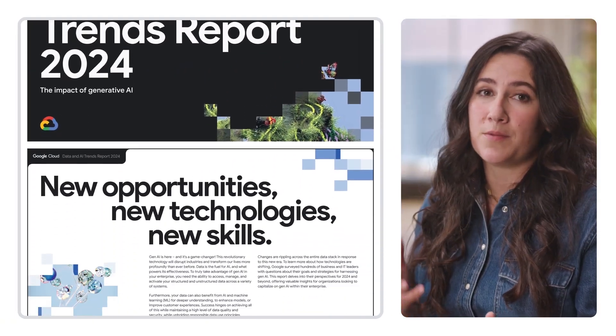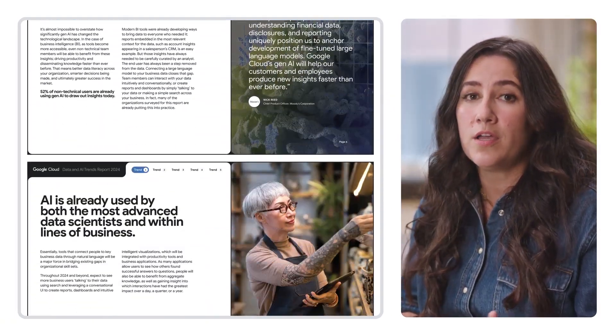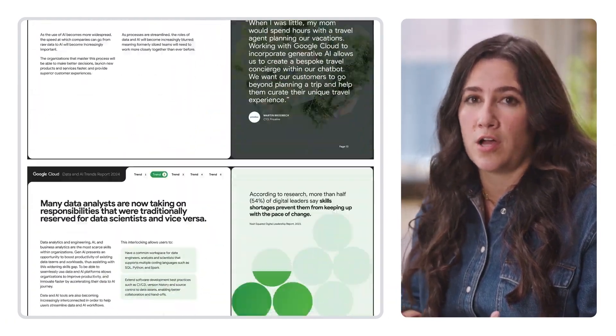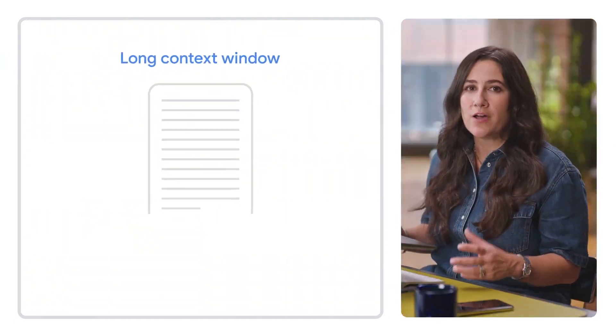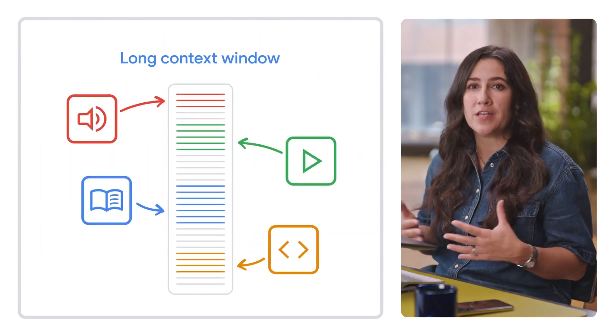A generative AI tool can summarize long blocks of text, extract key insights, and even transform them into new resources. You can also specify your preferred format in your prompt so you get exactly the type of output you want. If the report is so long, you'll need to use a Gen AI tool with a long context window — a long context window allows for the processing of a large amount of information in different formats at once, and it enhances the model's ability to understand and generate more coherent and contextually relevant responses.